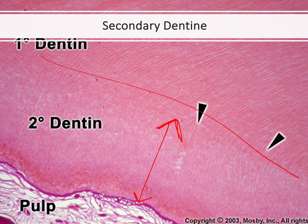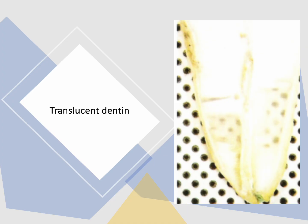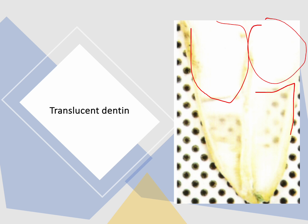With time, the peritubular dentine fills the tubules of the dentine, occluding them — they are fully filled with peritubular dentine. When we put a tooth in water, the tubules are normally filled with water, but where the tubules are occluded with peritubular dentine, they have the same refractive index as the intertubular dentine. So the peri- and intertubular dentine become the same refractive index.